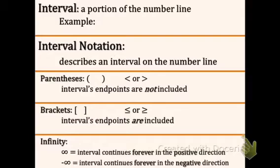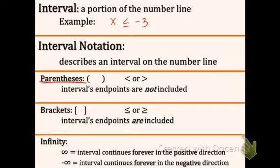Now we're going to learn what an interval is — it is a portion of the number line. For example, X is less than or equal to negative 3 is an interval because only numbers equal to or less than negative 3 are included. We'll learn interval notation, which describes an interval on the number line using a specific format. For parentheses: the interval's endpoints are not included. Parentheses — endpoints not included.